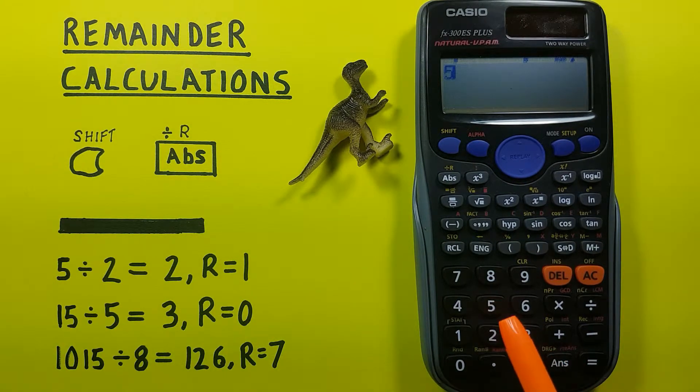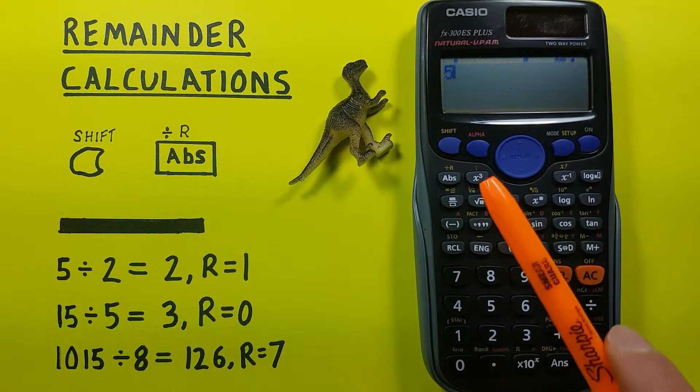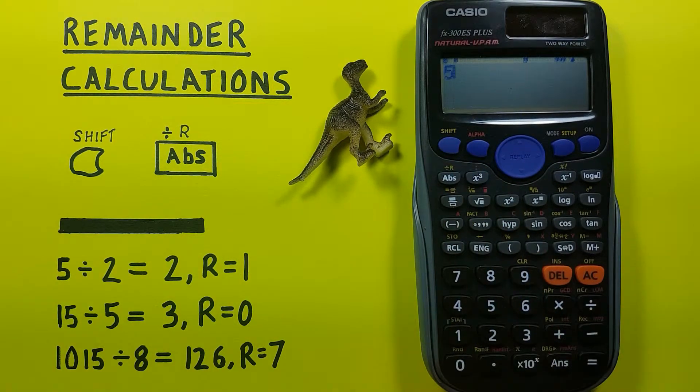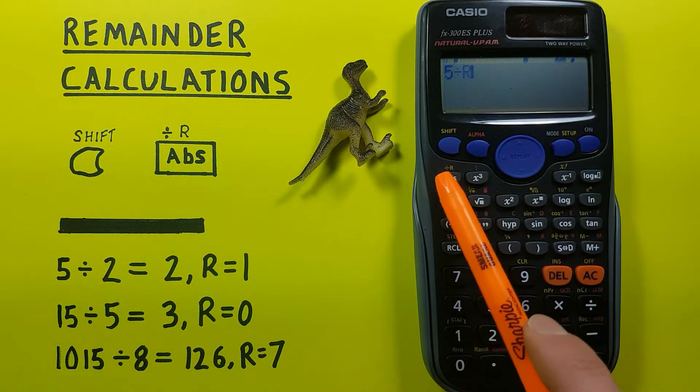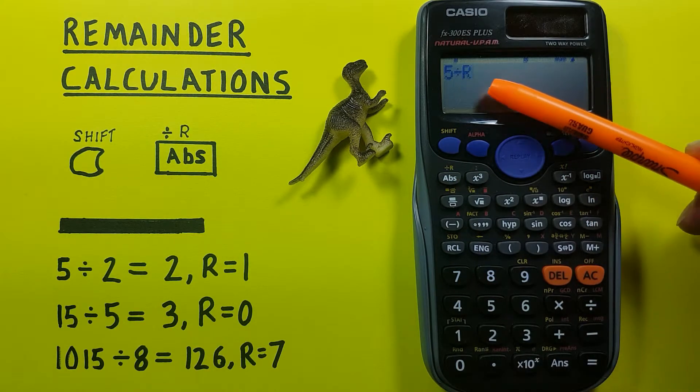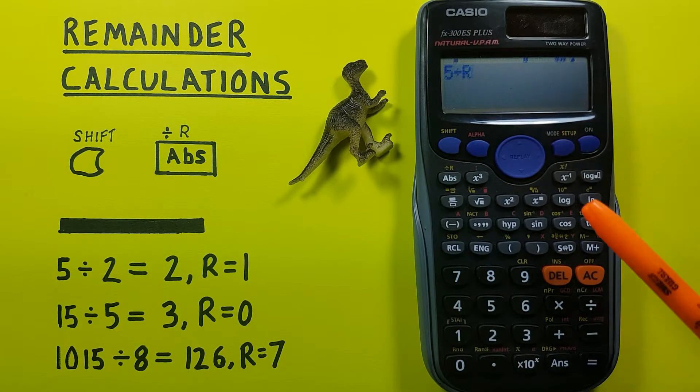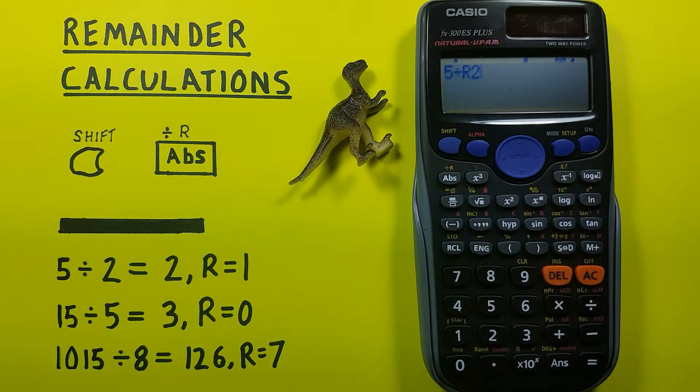First we would press 5 and then shift and then the ABS key so that we see we have 5 divided by R on the screen and then press 2. So we have 5 divided by R2 and equals.